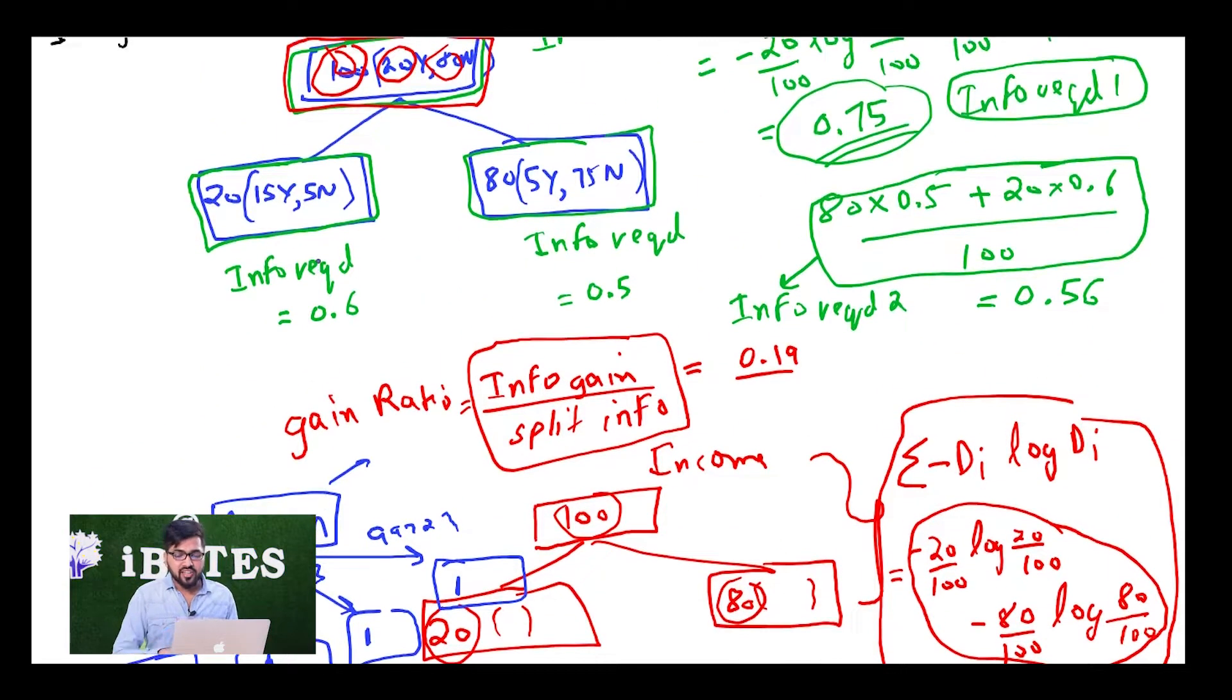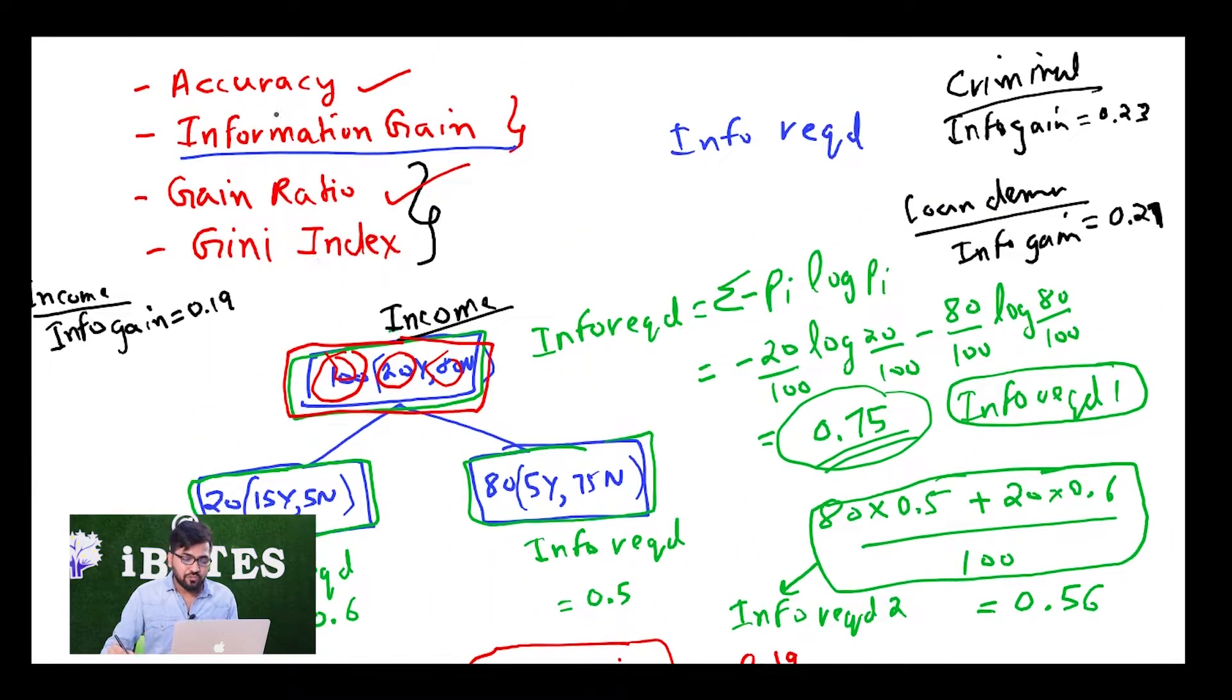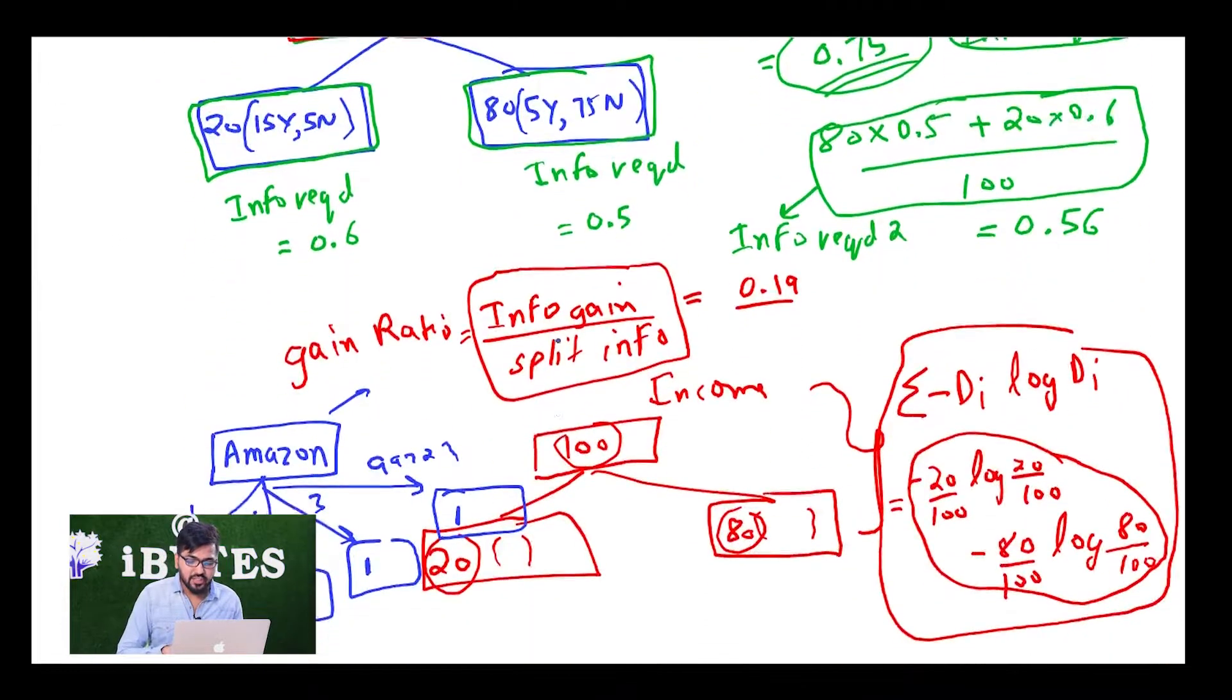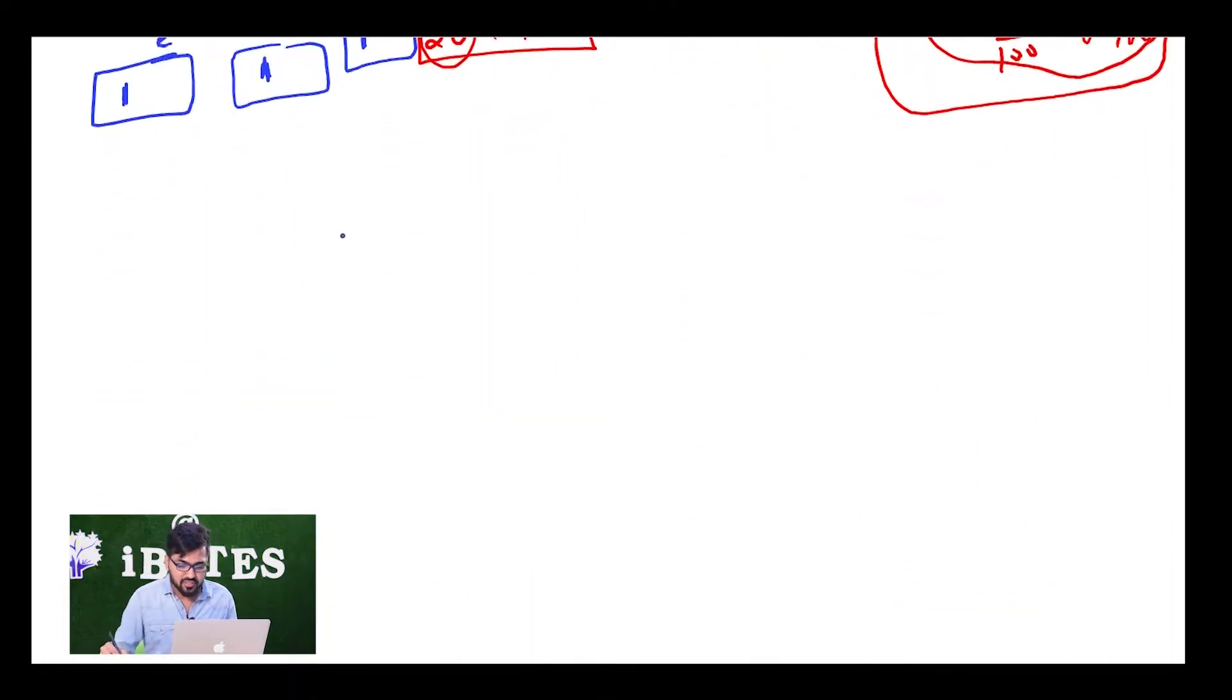But in reality, from all these four, we only use Gini index. The inbuilt decision tree also uses Gini index. The inbuilt decision tree of sklearn also uses Gini index as its splitting parameter because Gini index is probably the best. Now let's look at what Gini index is. This is by far the most important.